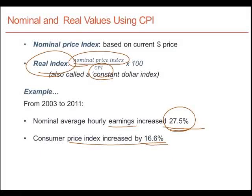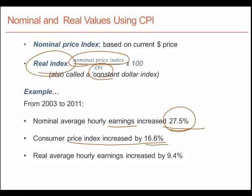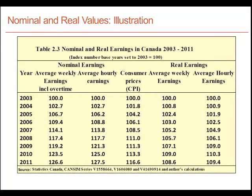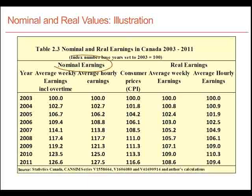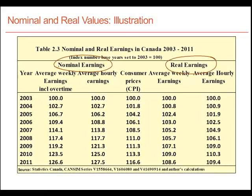What is the numerical value of the real increase in hourly earnings? We can get that by dividing one series into the other. Real average hourly earnings increased by 9.4%. We take the value of earnings in different periods, divide by the consumer price index in those periods, and get real earnings. In the table, we have nominal earnings — earnings given in dollar values, not adjusted by the CPI — and we adjust them by the CPI to get a real index of earnings.